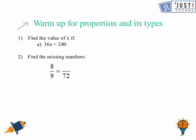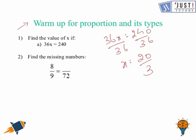So basically, in question number 1, you need to find out the value of x. It's 36x equals 240. So we can divide both sides by 36. This will give x as 20 over 3, which we can represent as 6 wholes, 2 thirds.